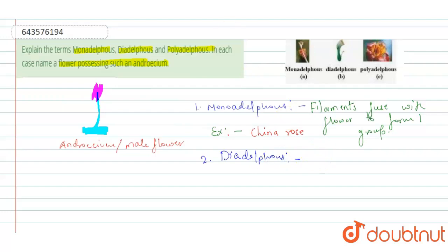So in this condition, filaments are fused with flowers to form two groups.